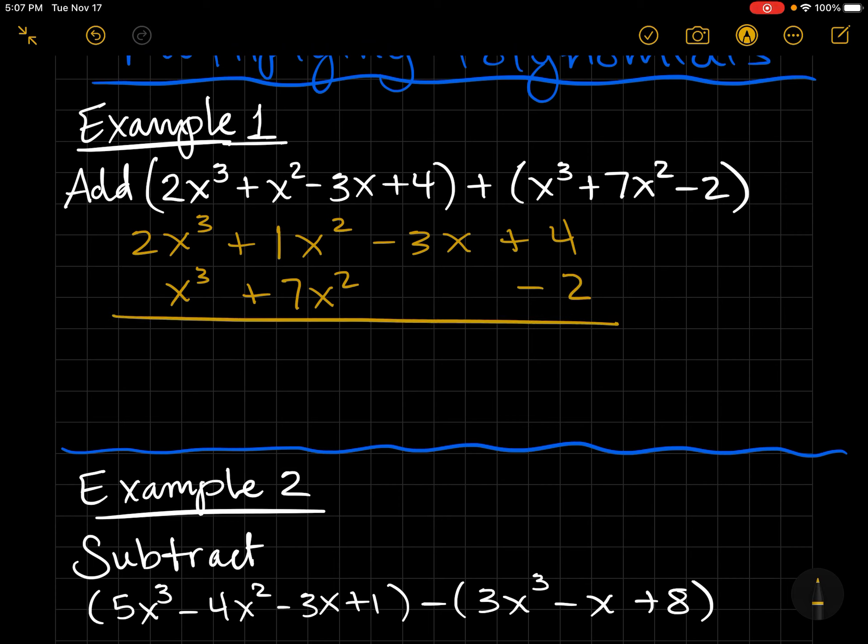Make sure you know that if there's no coefficient there then the coefficient is 1. So I have 3x³ + 8x² - 3x + 2. Final answer.